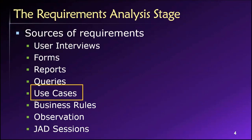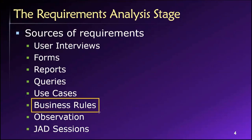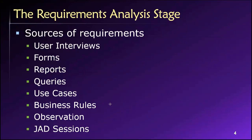Another source is use cases or user stories — from the unified modeling language, these tell what a particular user of the system needs to do. They can contain information about the data needs of various actors as they interact with an information system. Company business rules are also a great source — these are policies and decisions about how a company operates, such as whether employees are required to work in departments. If we have knowledge of these business rules, we can ensure our database design will support or automatically enforce them, preventing them from being broken.